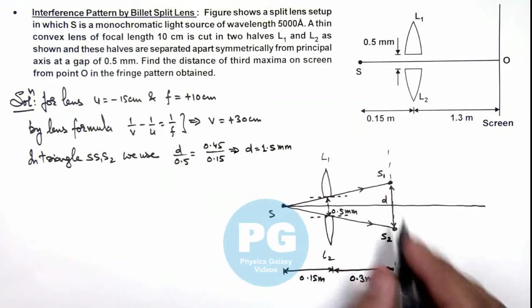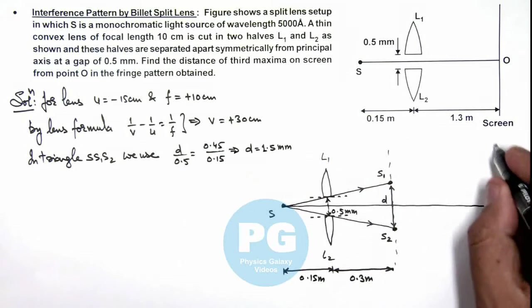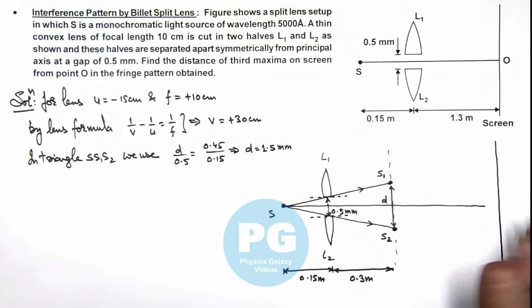This is the separation between the two images which will act as two coherent sources for the light interference to be produced on screen. And this separation of screen from these images, as this is 1.3 meter minus 0.3, this will be taken as 1 meter.